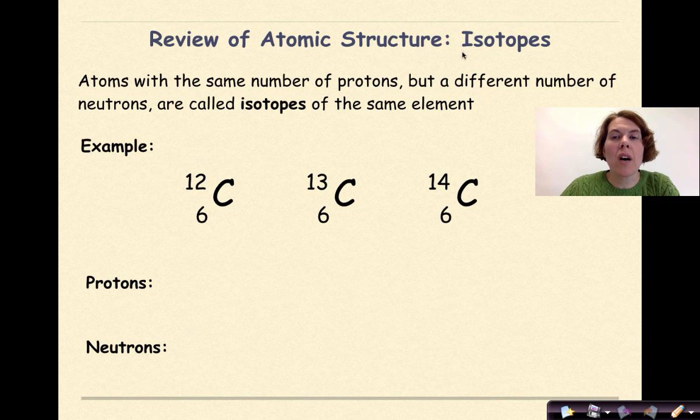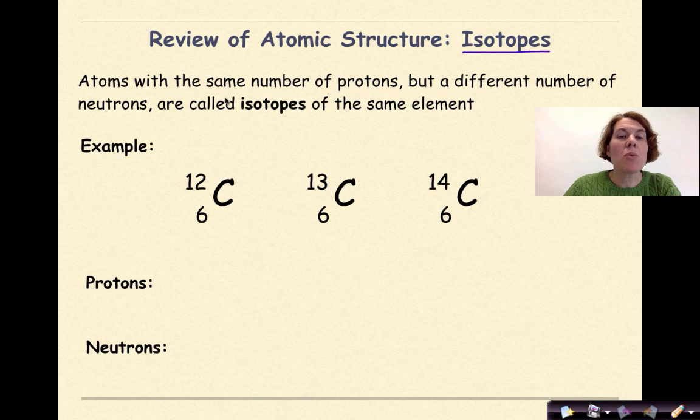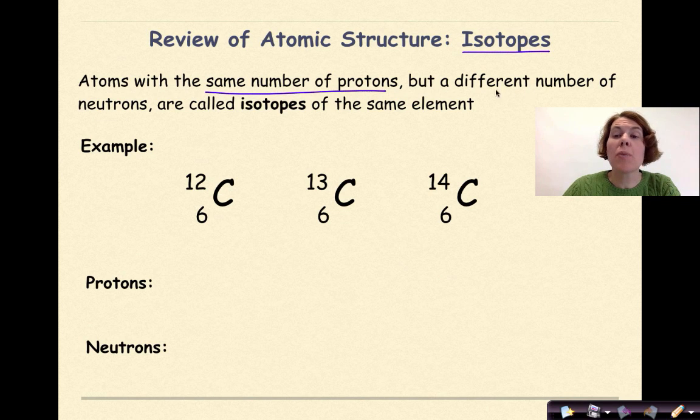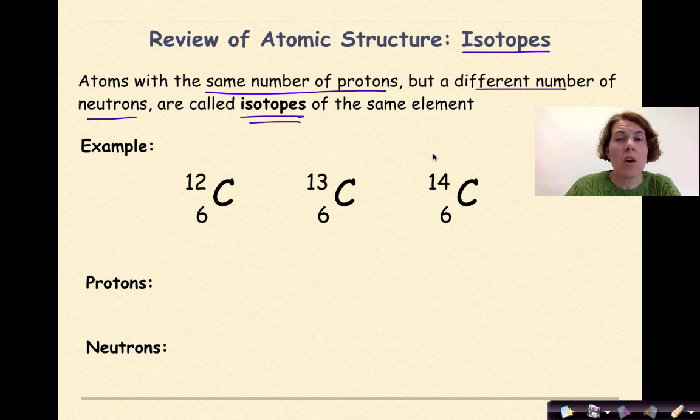Now let's do a little review of isotopes. Atoms with the same number of protons, but different number of neutrons are called isotopes of that element. So here we have three isotopes of carbon. If I was to look at the first example, I'd say, all right, well the number of protons must be 6, because my atomic number is 6.